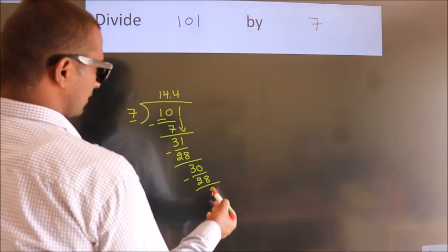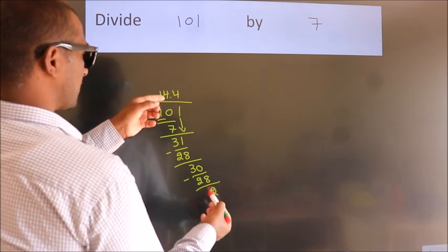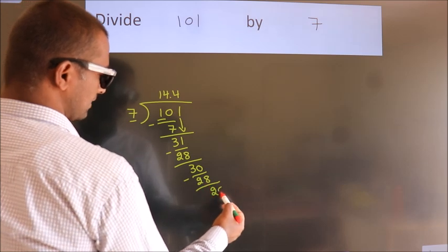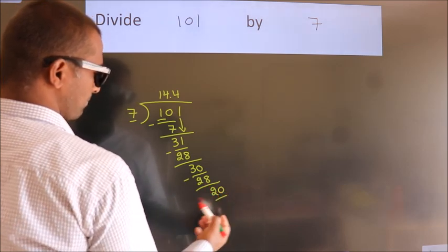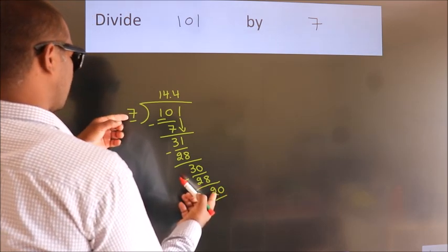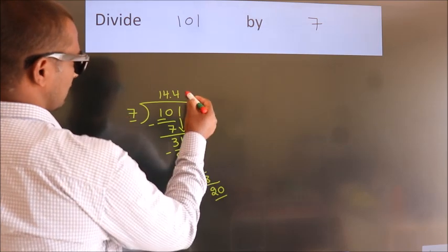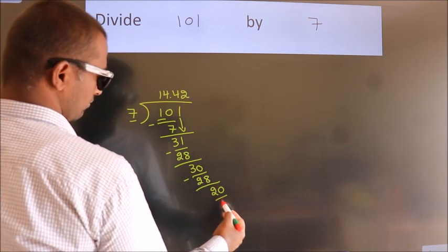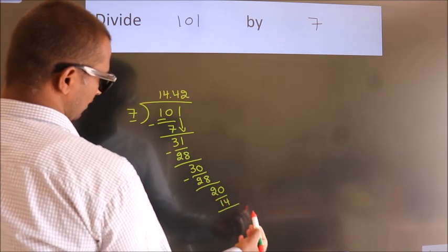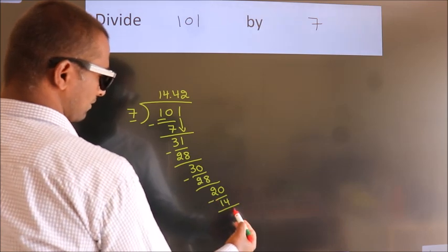After this, we already have the decimal, so directly take 0, giving us 20. A number close to 20 in the 7 table is 7 twos, which is 14. Now we subtract and get 6.